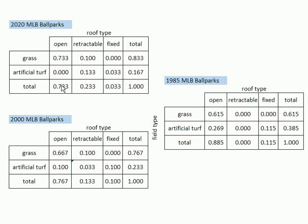Notice that open air ballparks actually have gone down over time. In 1985 it was 88.5 percent, by 2000 it was 76.7 percent, and now it's 73.3 percent. There are less open air ballparks. Where is that change coming in? Look at the retractable column.